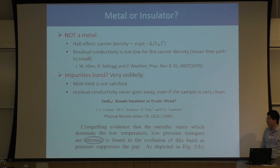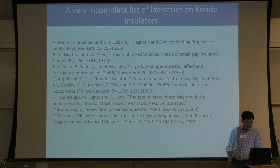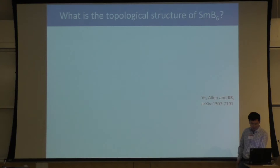In the 90s, people started to speculate that maybe this low temperature conductivity is not from dirt — it may be from something intrinsic. But how can an insulator have intrinsic conductivity? That question puzzled people for several decades. This is a very incomplete list about the Kondo insulator and SMB6 literature, but the bottom line is that question remained puzzling for people after several decades of the compound's discovery.